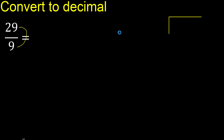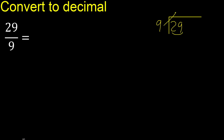29 divided by 9. 2 is less, therefore next. 9 — 29 is not less, therefore with 29: 9 multiplied by which number is nearest to 29 but not greater? 9 multiplied by 4 is 36, 36 is greater.